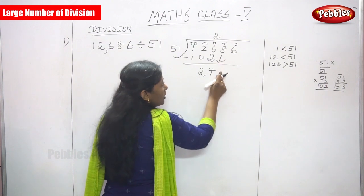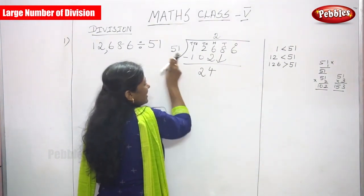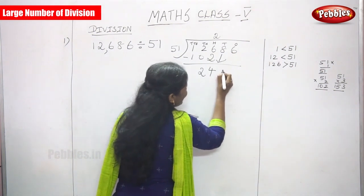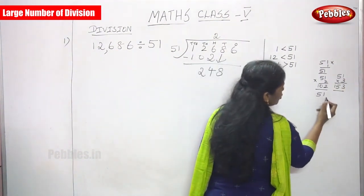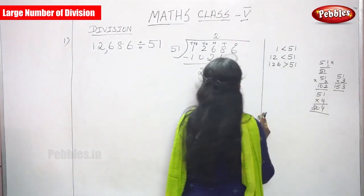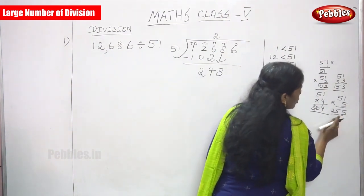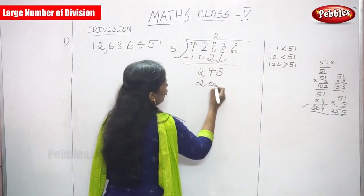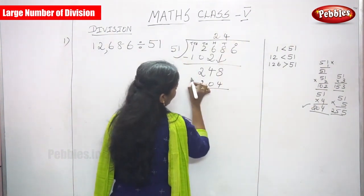Before bringing down a digit, always compare the current remainder with the divisor. Here 24 is less than 51, so bring down the next digit, 8, making it 248. Now find what 51 goes into 248: try 51×4=204, then 51×5=255, which is greater than 248. So the right choice is 51×4=204. Write 4 in the tens place.